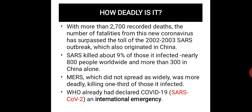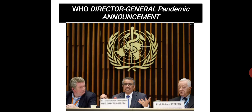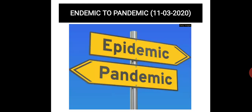How deadly is it? SARS-CoV in 2002–2003 had more than 2,700 recorded deaths, killing about 9% of those infected — nearly 800 people worldwide, and more than 300 in China alone. MERS, which did not spread as widely, was more deadly, killing one-third of those infected. WHO has declared COVID-19 an international emergency, and on 11th March 2020 it was upgraded from an epidemic to a pandemic.